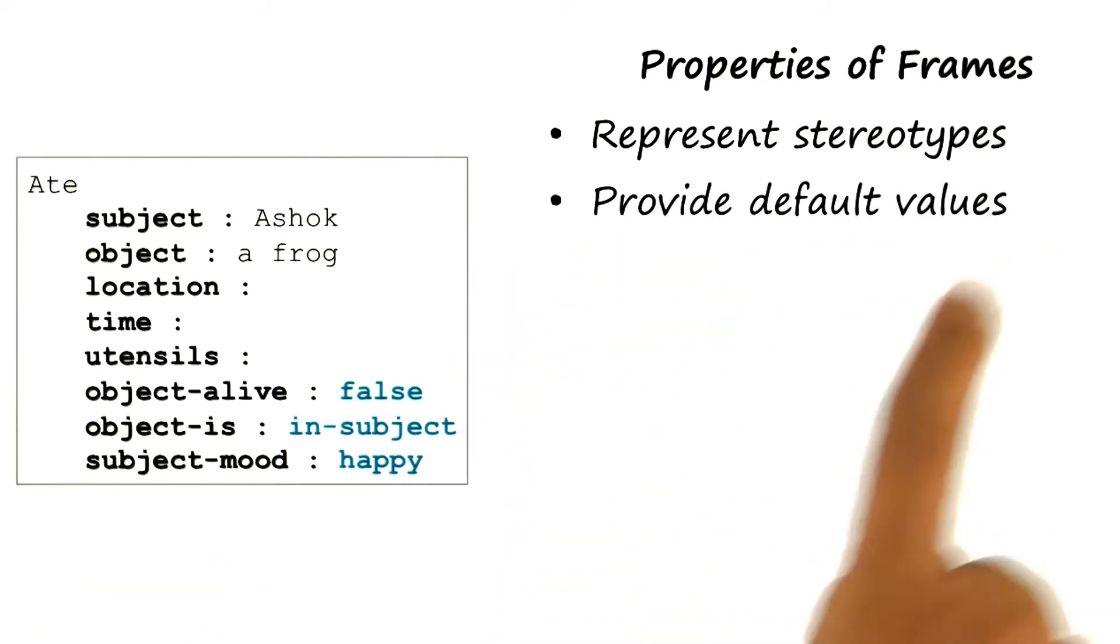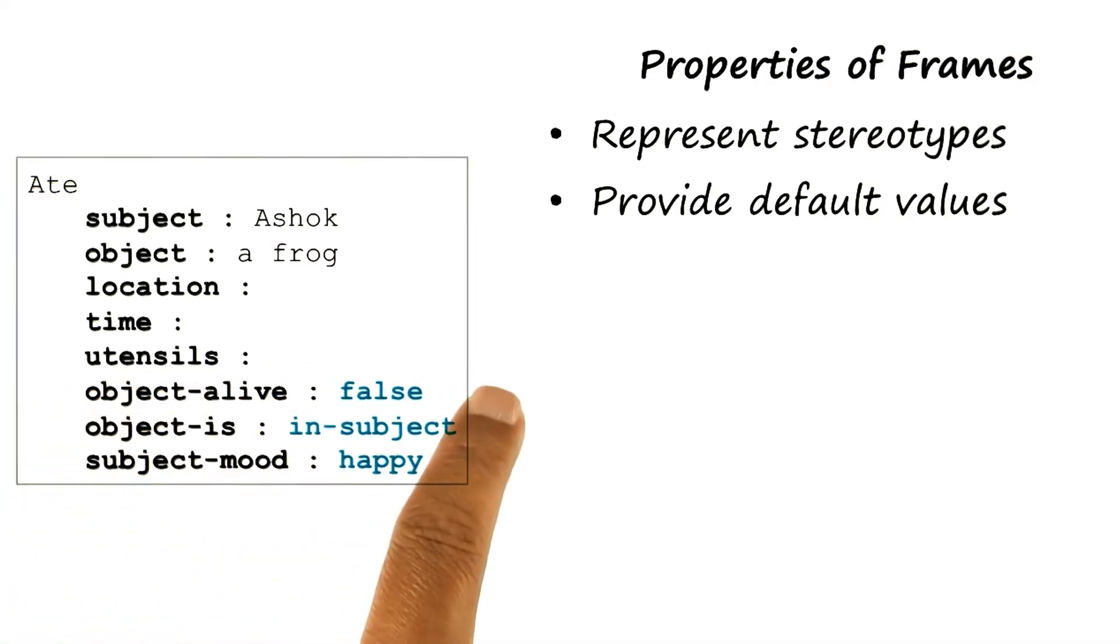Second, frames provide default values. So not only do they have these slots which come from our notions of a stereotype of this particular verb, but many of these slots may have values already filled in. As an example, I may already have a default value which says that after the object has been eaten, it is no longer alive. It is inside the subject's stomach and the subject's mood is now happy. These are all default values.